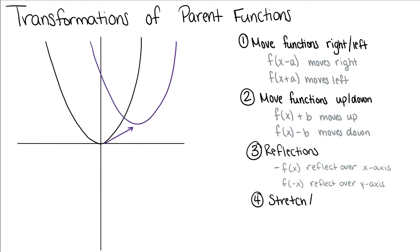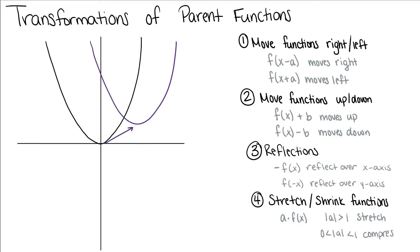The last thing we can do is stretch or shrink a function. We multiply our entire function by some value. When the absolute value of that number is greater than 1, we're going to stretch it vertically. And when that number is between 0 and 1, or a fraction, we're going to compress it, so it grows horizontally and gets wider.